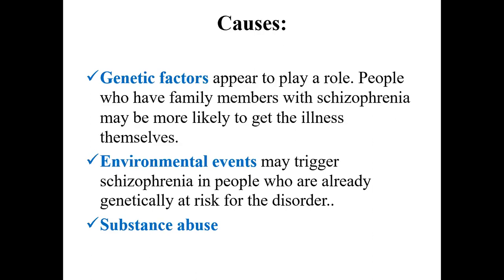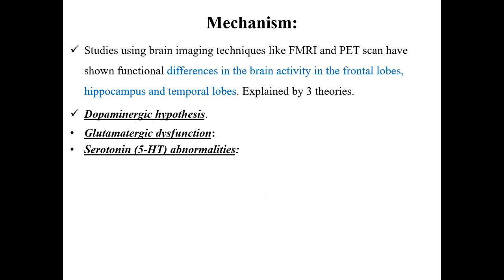That's about the causes or etiology of Schizophrenia. Now we will see what is pathogenesis, or the mechanism of Schizophrenia. Studies using brain imaging techniques — you know what is fMRI, that is Functional Magnetic Resonance Imaging, and PET scan, which is Positron Emission Tomography — have shown functional differences in brain activity in the frontal lobe, hippocampus and temporal lobes of the brain.